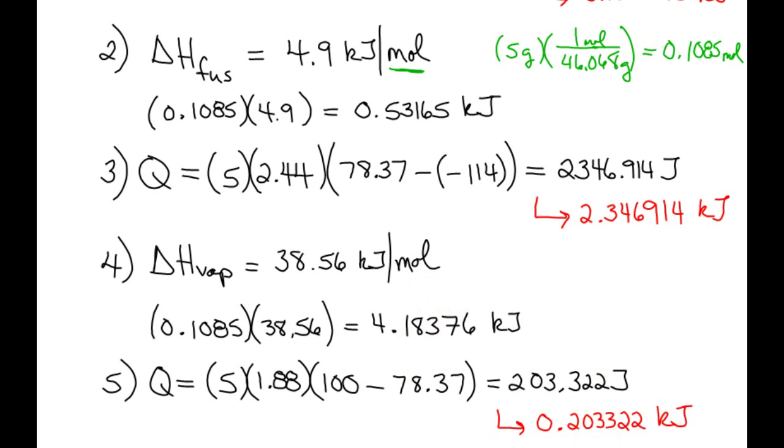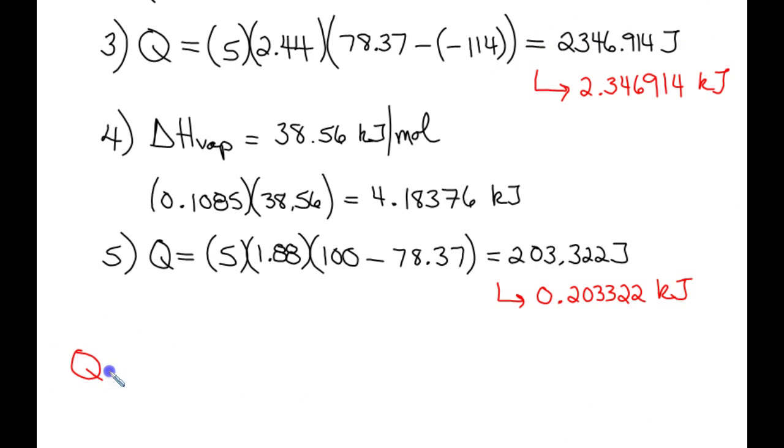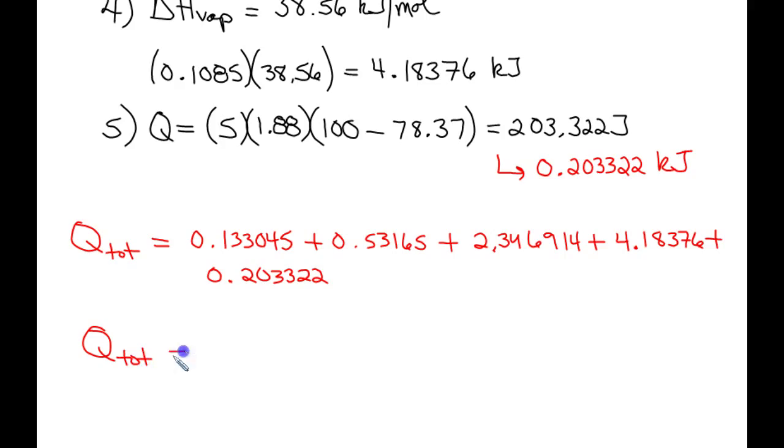So we have calculated every step in our journey. So the final step is to get Q total. I'm just going to take the Q values from each step and add them all together. So we had 0.133045 plus 0.53165 plus 2.346914 plus 4.18376 plus 0.203322. So punch that all into your calculator. And now we finally need to round to three sig figs because the mass that I gave you had three significant figures, and the initial temperature had three significant figures. And that should round to 7.40 kilojoules, which is not really a great deal of energy at all.